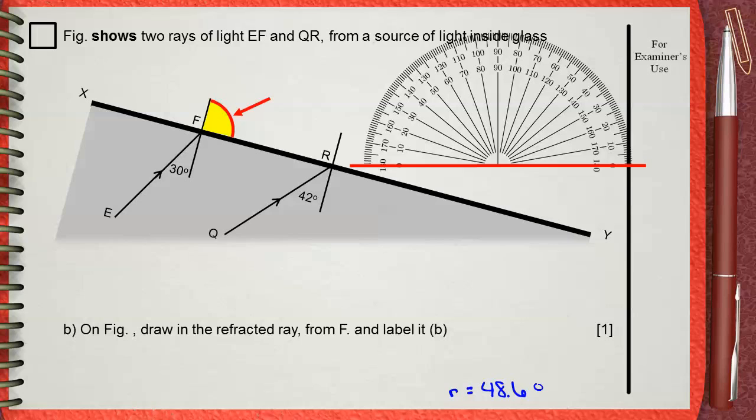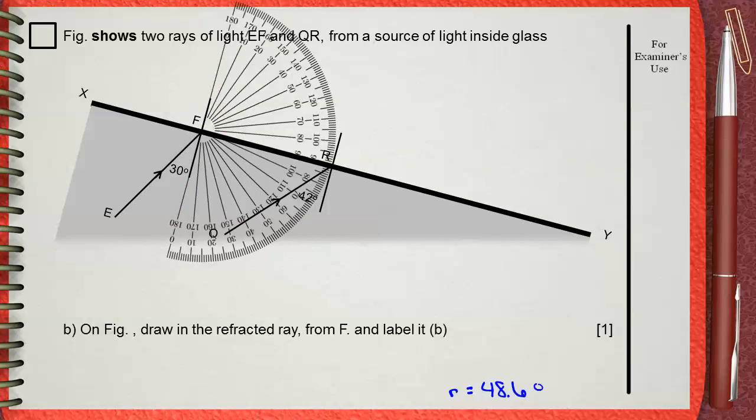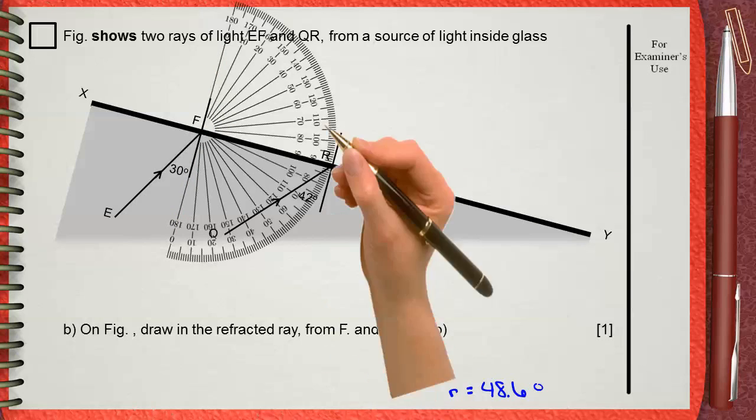You must put this line exactly on the normal to the surface. Also, the center point of the protractor will be on the head of the angle, which is at point F. This is how our protractor will be. Now we need to find 48.6 on the protractor. This is 48.6.